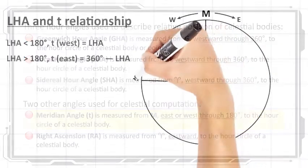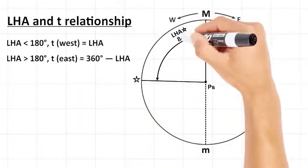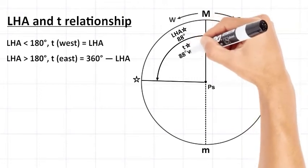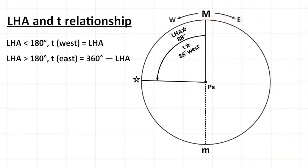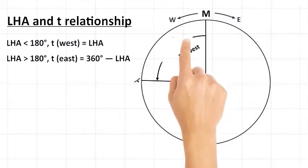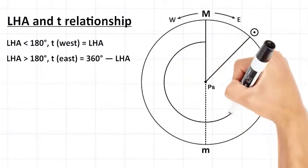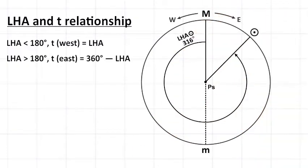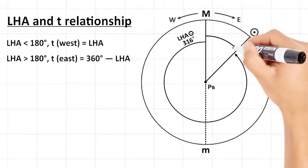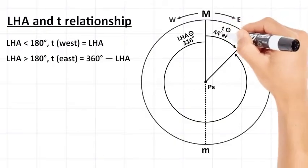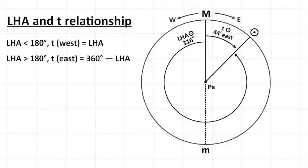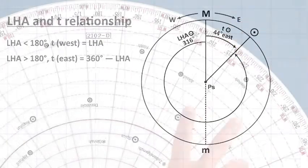The relationship between LHA and t is obvious on the time diagram. If the LHA of a celestial body is less than 180 degrees, t equals LHA and is labeled west. On the other hand, if LHA is greater than 180 degrees, t equals 360 degrees minus LHA and is labeled east.